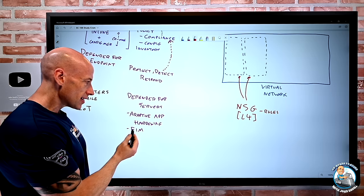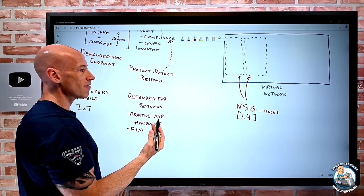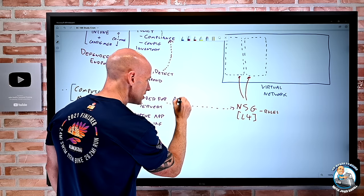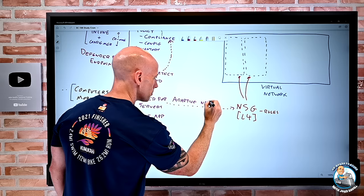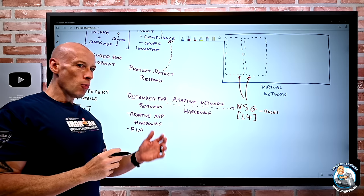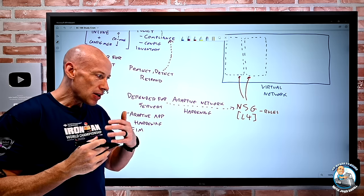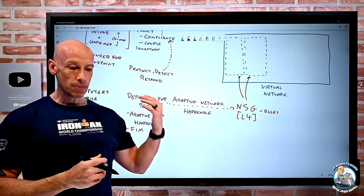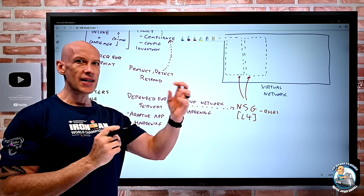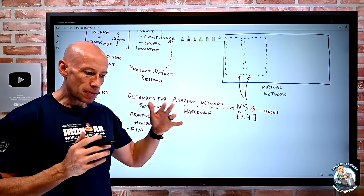Defender for Servers also has a feature called adaptive network hardening. Just like adaptive app hardening, it provides recommendations based on observed traffic, indicators of compromise, and threat intelligence to say: 'Your NSG is a bit generous — you have things open that you really shouldn't. Let's lock those down.' It gives me recommendations to change my NSG rules to make them more restrictive.